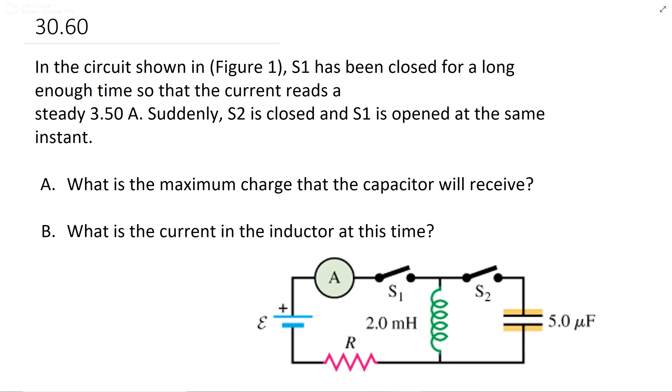They tell you that they close the second switch, open the first switch, and they want you to know the maximum charge of the capacitor and the current in the inductor at that time. When they say at this time, they mean at the time of maximum charge on the capacitor.